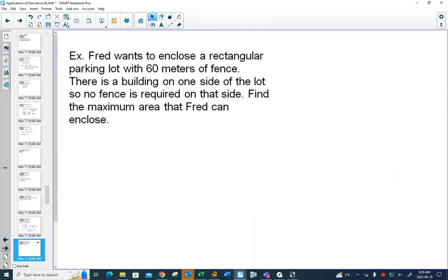So here's another question from grade 11. And in this example I'd say start off by showing a picture. Fred wants to enclose a rectangular parking lot with 60 meters of fence. I love these questions because then no cars can get in or out. Hopefully he would include a gate. There's a building on one side.